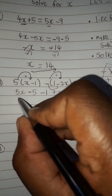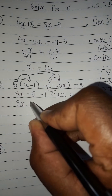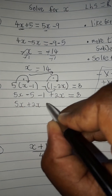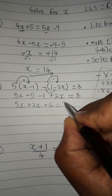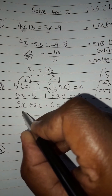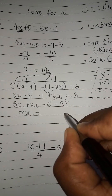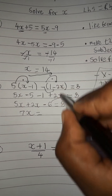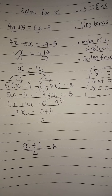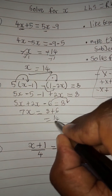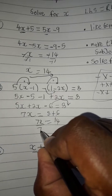Now for the second step, we are going to collect the like terms. We can see we have 5x plus 2x. Already the like terms are in order. We have negative 5 minus 1. What is negative 5 minus 1? That's minus 6. So equate it to 8. 5 plus 2 will be 7x. Take the negative 6 to the other side — since it's negative, it becomes positive. So it's going to be 8 plus 6, which is 14. So we have 7x equals 14.